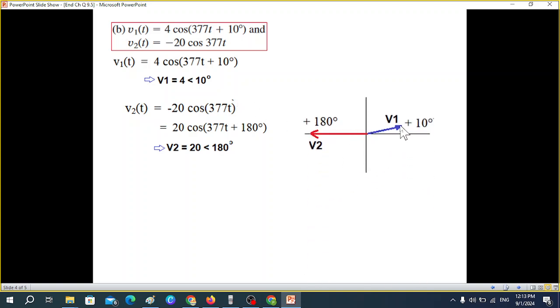And we plot both of them now. This one V1 is 10 degrees and this is 180 degrees. And the difference between the two you can see is 170 degrees from 10 to 180. And going clockwise we can see this one is ahead. That means V2 is leading. So V2 leads V1 by 170 degrees.